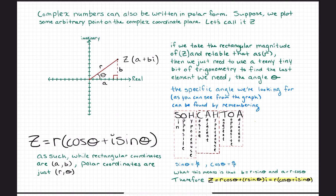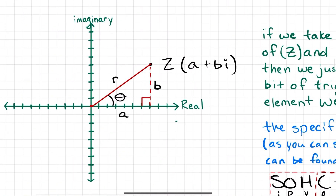Okay, not too hard — you'll remember SOHCAHTOA from school, hopefully. Complex numbers can also be written in polar form. Suppose we plot some arbitrary point in the positive real and imaginary quadrant — quadrant one. I'm going to label this point Z. This Z has a magnitude of R. The variable R comes from the fact that it's the radius, which is kind of going into polar form here. R is going to be the hypotenuse of a right triangle that we draw with respect to the actual axes of our grid.